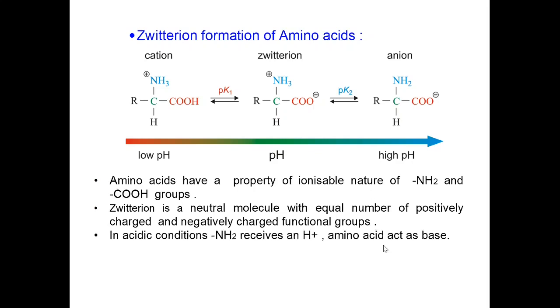In acidic conditions, amino receives a hydrogen ion and amino acid acts as a base. Look at the diagram here. This is NH3 plus. It becomes cation here and behaves as a base at low pH value or high acidic conditions.